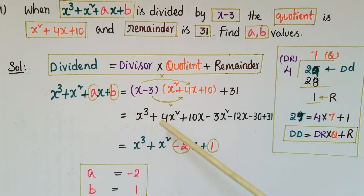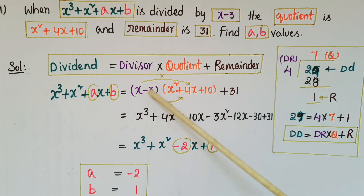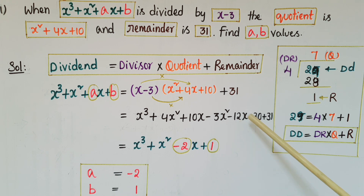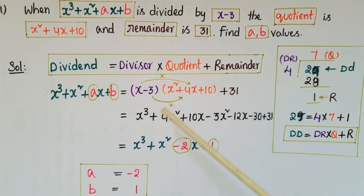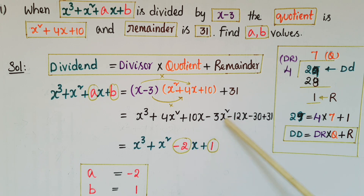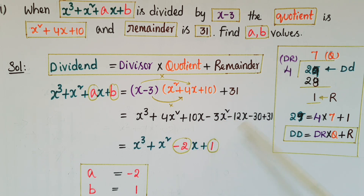Expanding: x into x square plus 4x plus 10 gives x cube plus 4x square plus 10x, minus 3 into x square plus 4x plus 10 gives minus 3x square minus 12x minus 30, plus 31. Combining: x cube, 4x square minus 3x square is plus x square, 10x minus 12x is minus 2x, and minus 30 plus 31 is 1.